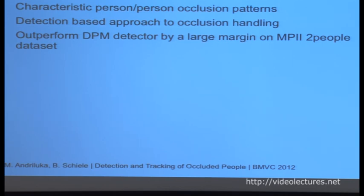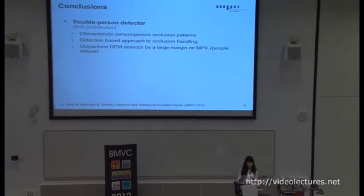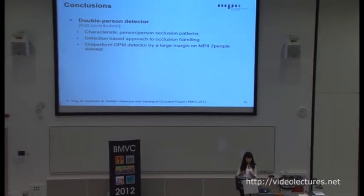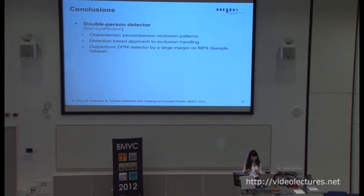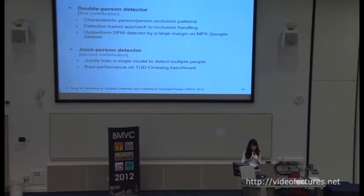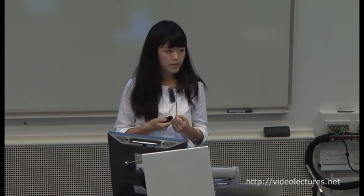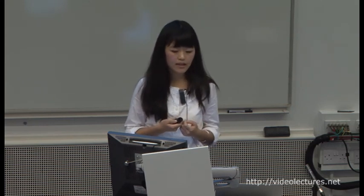In conclusion, occlusion handling is a very challenging task in computer vision because it often requires carefully reasoning about the relationships of subjects in the scene. We propose a detection-based approach to occlusion handling based on the observation that in crowded street scenes, most people are occluded by another person, resulting in very characteristic appearance patterns that can be explicitly trained and used to detect the presence of two persons. Our proposed detector outperforms the DPM single person detector by a large margin on our two-people dataset. For the second contribution, we propose a joint person detector — a jointly trained single model to detect all people in crowded street scenes — achieving the best performance on the TUD crossing benchmark and demonstrating its potential as a building block for multiple people tracking by detection. Thank you for your attention.